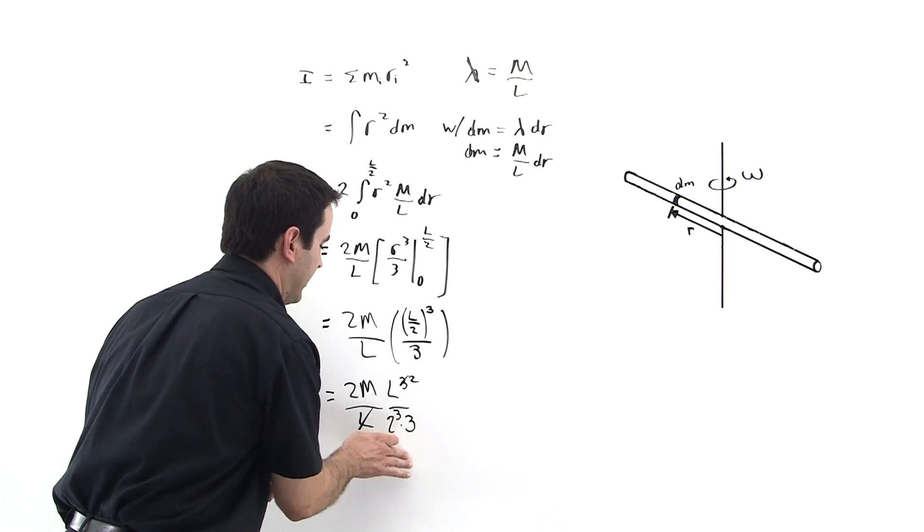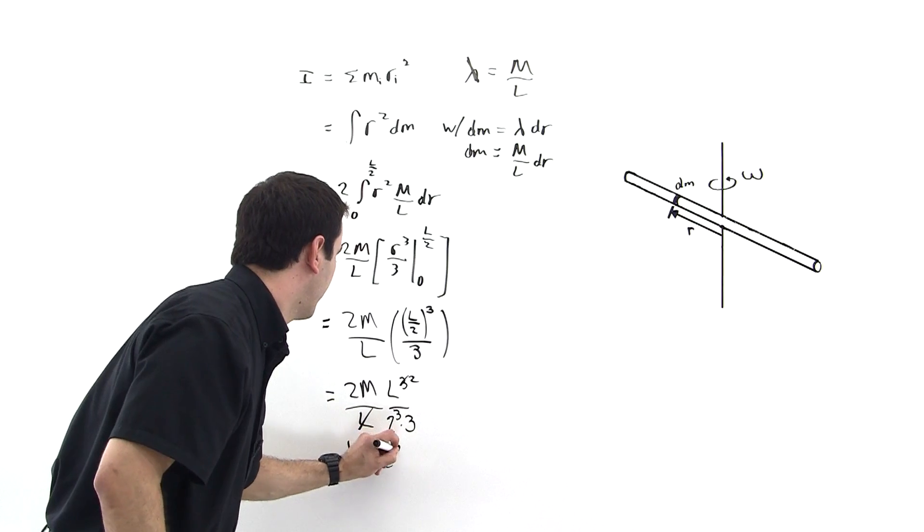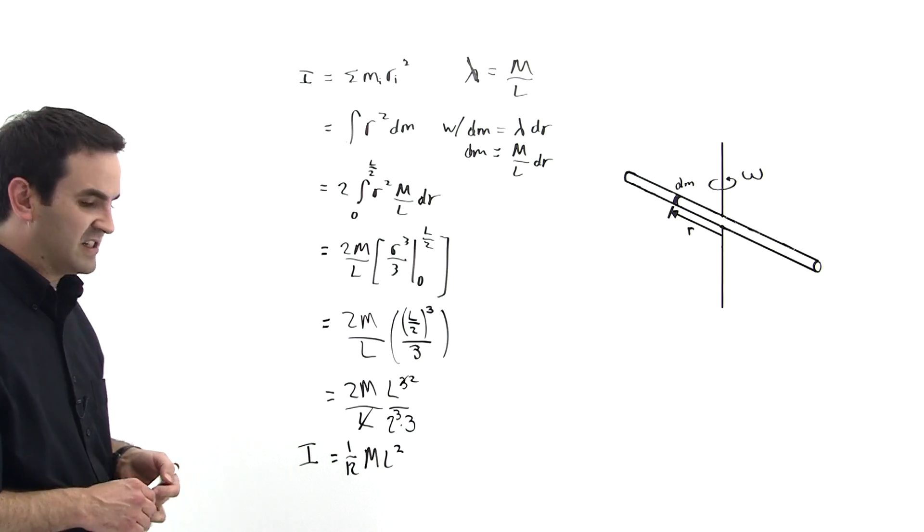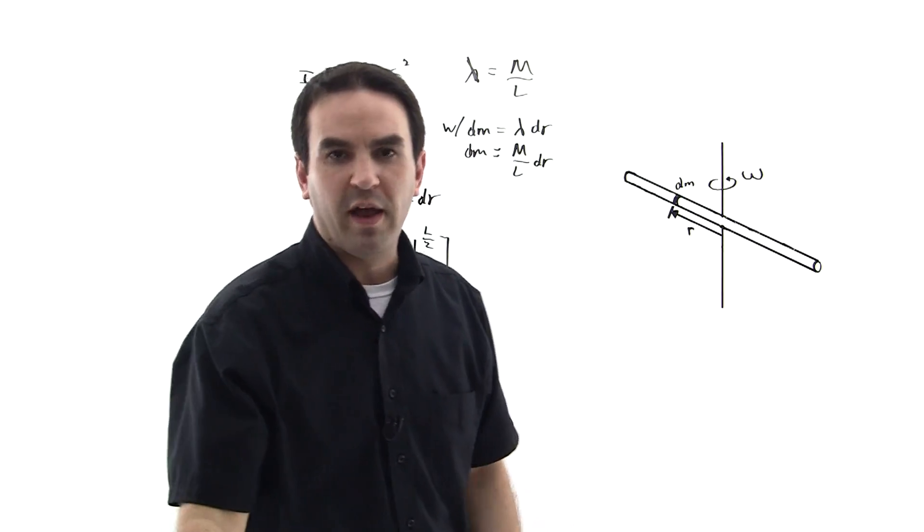So this is the general procedure that you would go through for deriving the moment of inertia of an object about some axis. Okay? All right. See you next time.